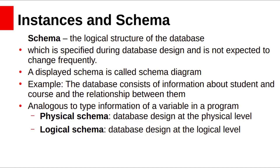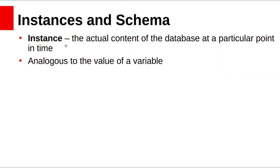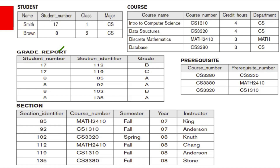Before discussing database architecture, let us see some basics: instances and schema. The description of a database is called the database schema, which is specified during database design. The pictorial representation of the schema is called a schema diagram. For example, a university database consists of information about students and courses and the relationships between them — similar to type information of a variable in a program. Physical schema is the database design at the physical level; logical schema is the database design at the logical level. The actual content of the database at a particular point in time is called an instance of the database, similar to the value of a variable.